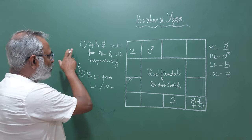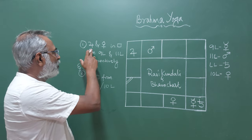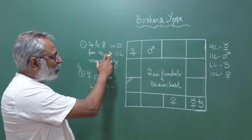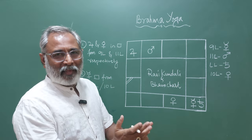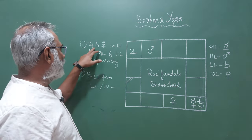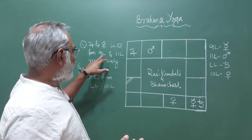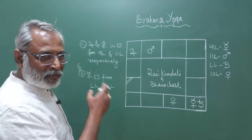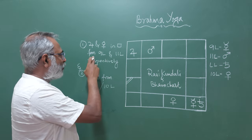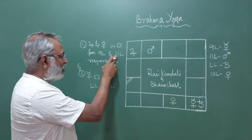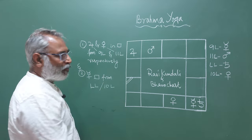The two most important criteria for this yoga to form are Jupiter and Venus. They both have to be in quadrants. Quadrants are first, fourth, seventh and tenth from the given planet. From Jupiter, a quadrant. That is either the ninth Lord should be in the quadrant from Jupiter. So let me first tell the whole sentence. Jupiter and Venus in quadrant from the ninth Lord and the eleventh Lord respectively. Respectively means ninth Lord for Jupiter and eleventh Lord for Venus.